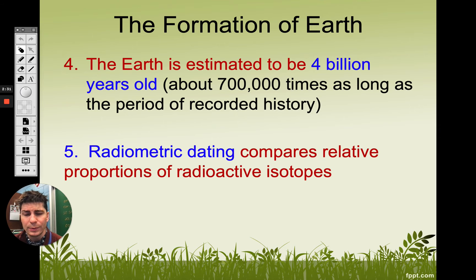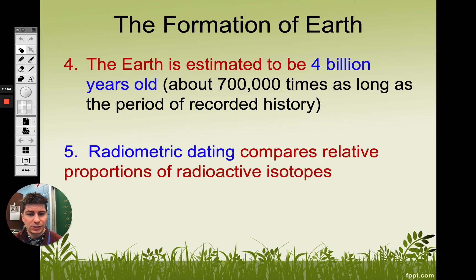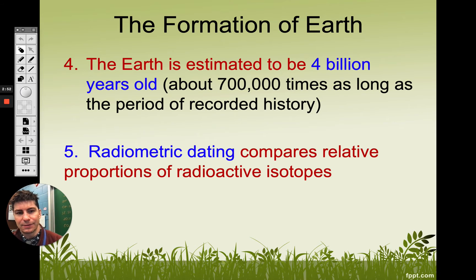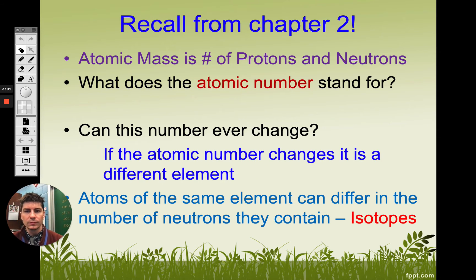Why we think it is about 4 billion years old is we are able to look at some of the things on earth and do radiometric dating using radioactive isotopes. These are elements that are radioactive, and we can determine how much of that element has decayed over time — and that's giving us that a little bit over 4 billion year old time period for when earth was established.